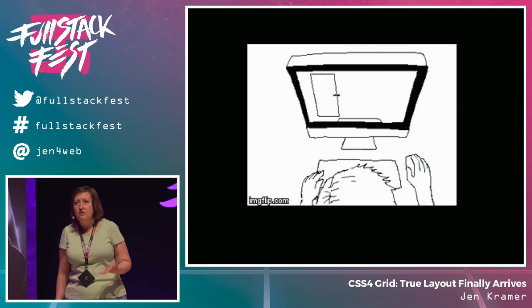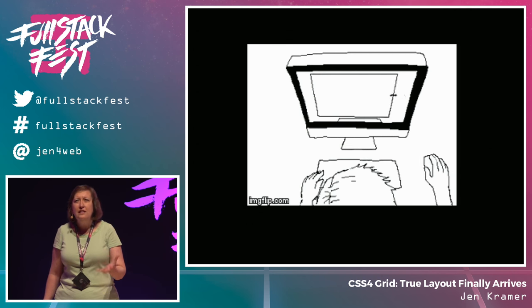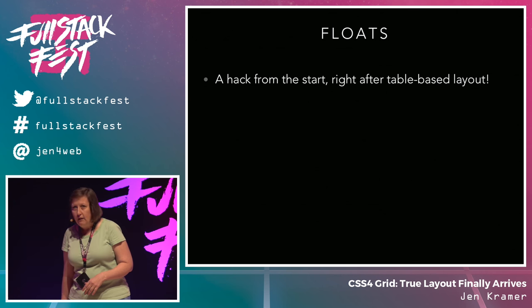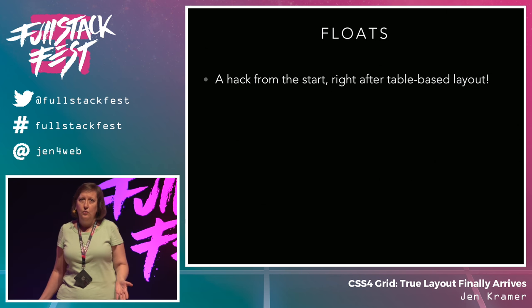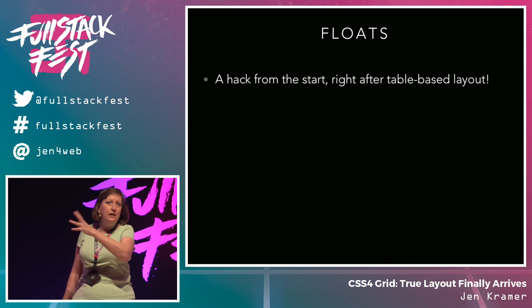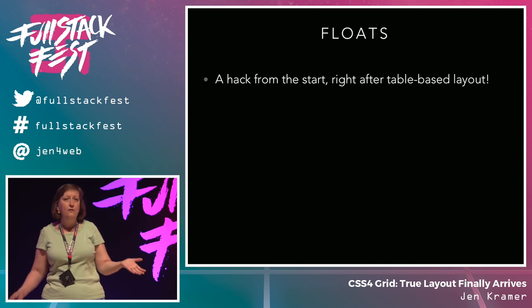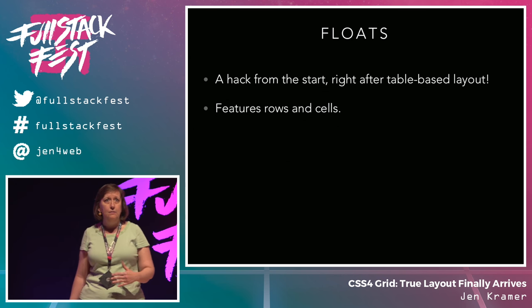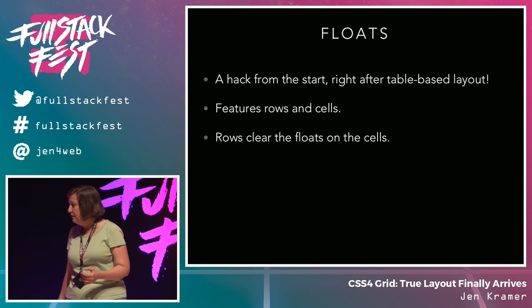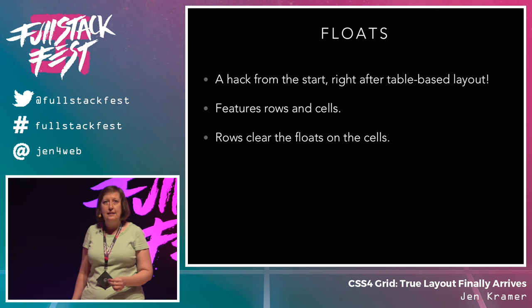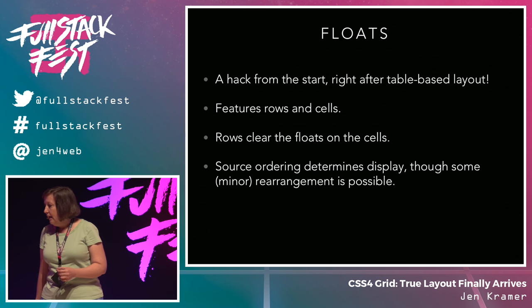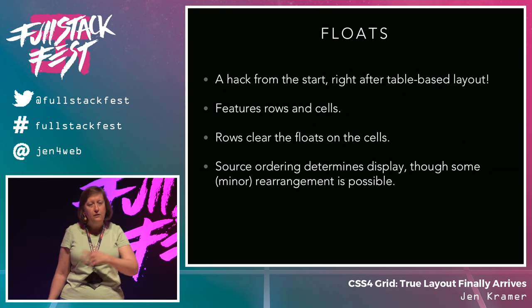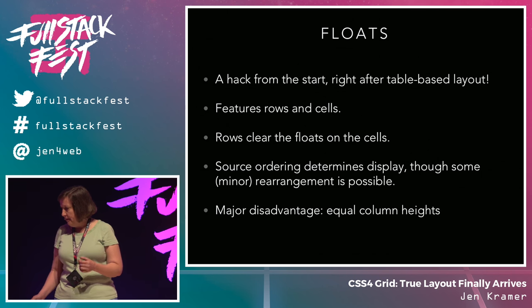Our current state of the art is floats — and really, it's a hack. We use tables as a hack, and floats are a hack too. Floats were never designed to be used for layout; they were designed to shove an image to the side and wrap a little bit of text around it. Somehow we've evolved them to use them for our full layout. They do feature rows and cells in a float-based grid system. The rows are there to clear the floats on the cells. Source ordering is going to determine the display of your grid system for the most part — you can swap things around a little bit, but not that much. You're rather limited.